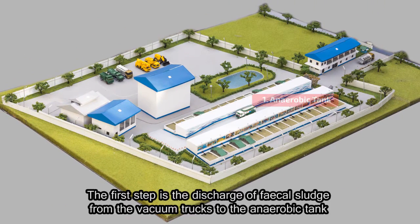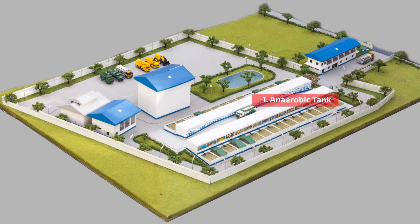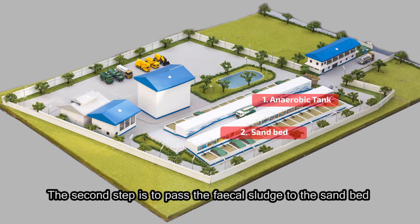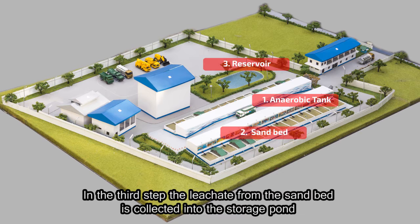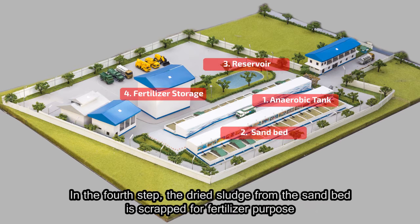The first step is the discharge of fecal sludge from the vacuum trucks to the anaerobic tank. The second step is to pass the fecal sludge to the sand bed. In the third step, the leachate from the sand bed is collected into the storage pond. In the fourth step, the dried sludge from the sand bed is scraped for fertilizer purposes.